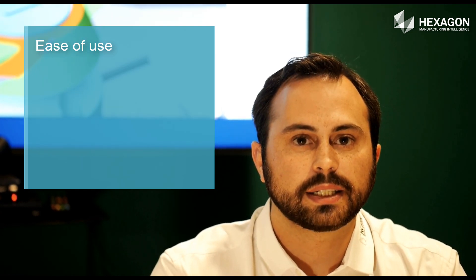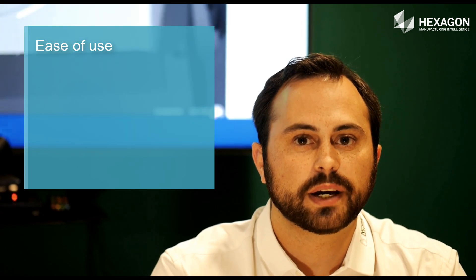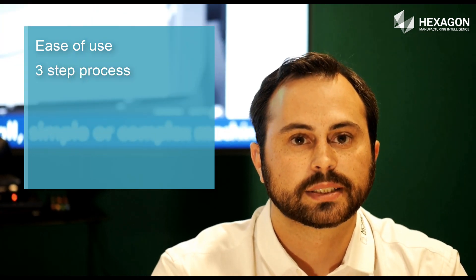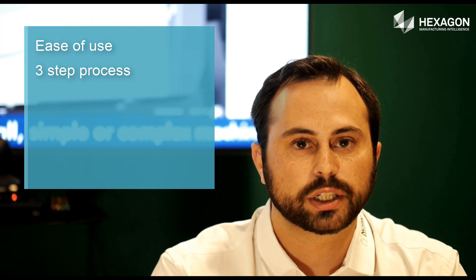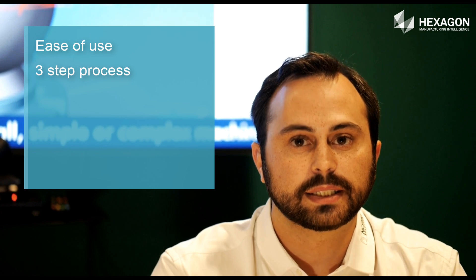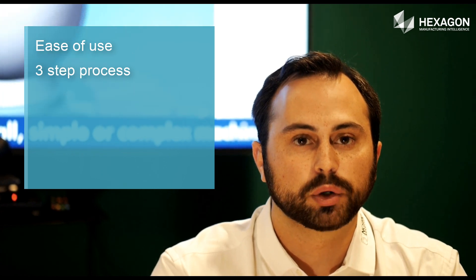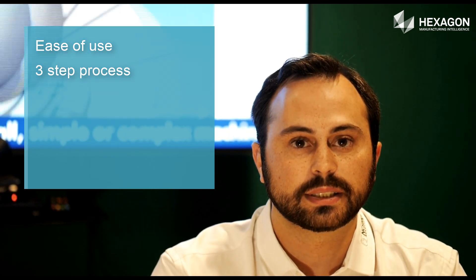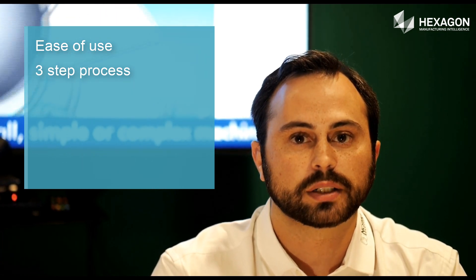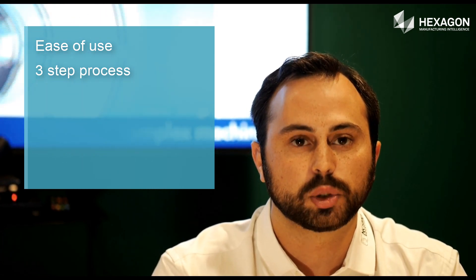Secondly, NC Simul is founded on a three-step process. Step one is G-code decoding. It can detect syntax errors and program inconsistencies, such as cuspidal point errors on cutter compensated toolpaths.